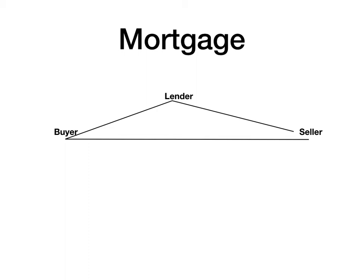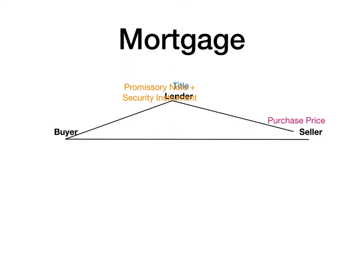If you are in a mortgage state, the buyer executes the promissory note and the security instrument — which is a mortgage — to the lender. The lender gives the purchase price to the seller, and the seller gives the title to the lender. The buyer still takes possession and has equitable ownership, but legal title is with the lender. In a mortgage state, foreclosures are done through the judiciary system — they're called judicial foreclosures.